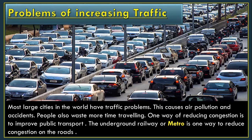Agar public transport fast aur efficient hoga toh kam se kam log apne khud ke vehicle ko use karenge aur zyada se zyada public transport ko use karenge. Jiski wajah se air pollution mein kami aayegi, accidents mein kami aayegi, aur logon ka travelling time bhi kam ho jayega. So everyone should use public transport. The underground railway or metro is one way to reduce congestion on the road, as you can see in the picture.